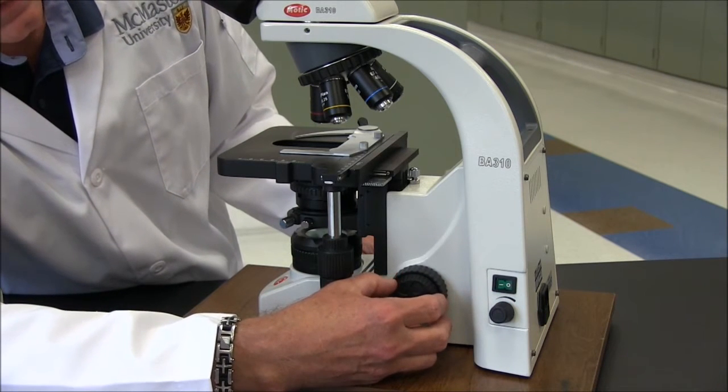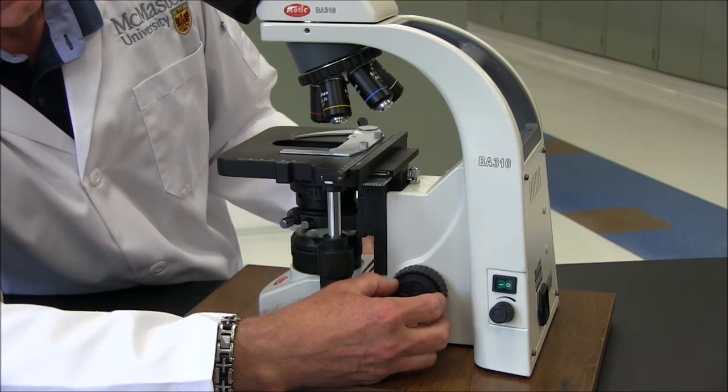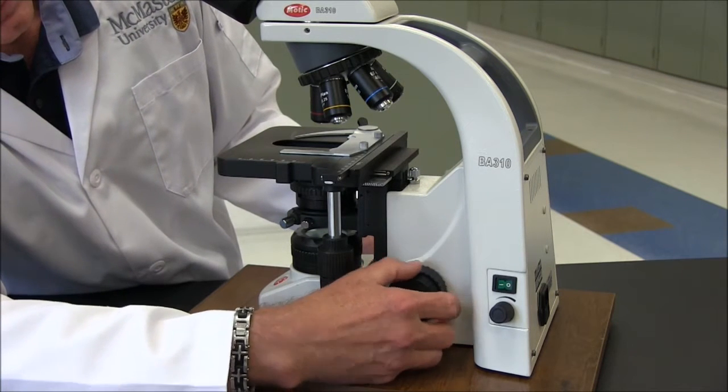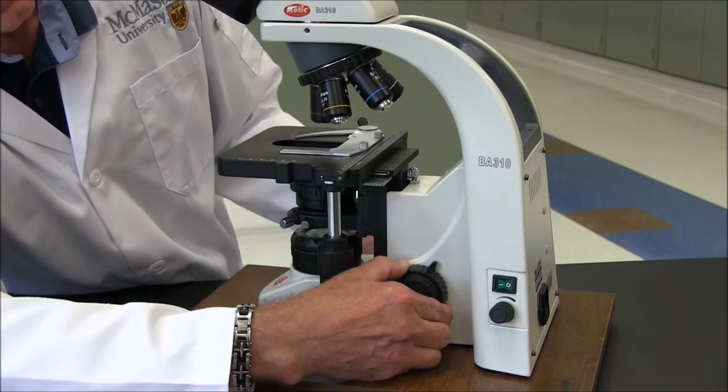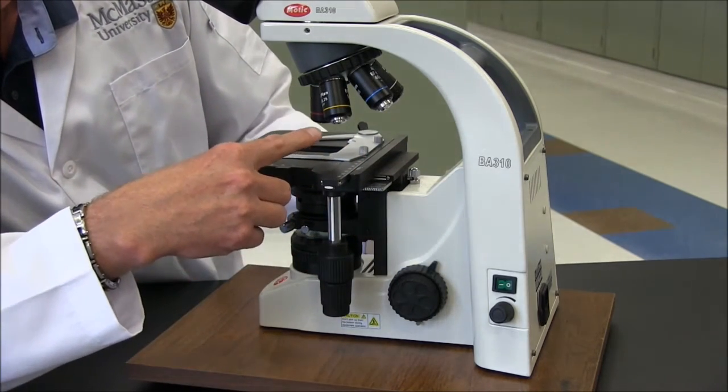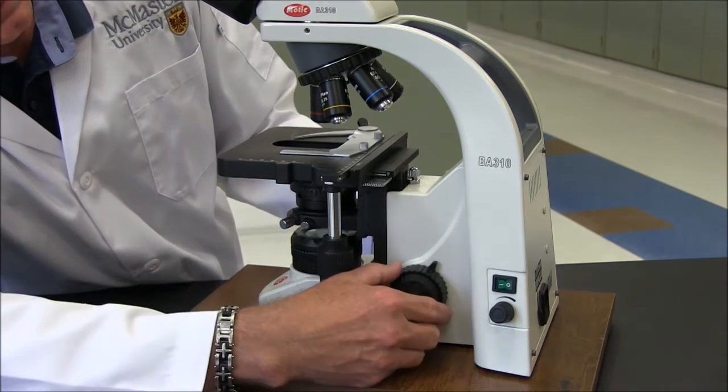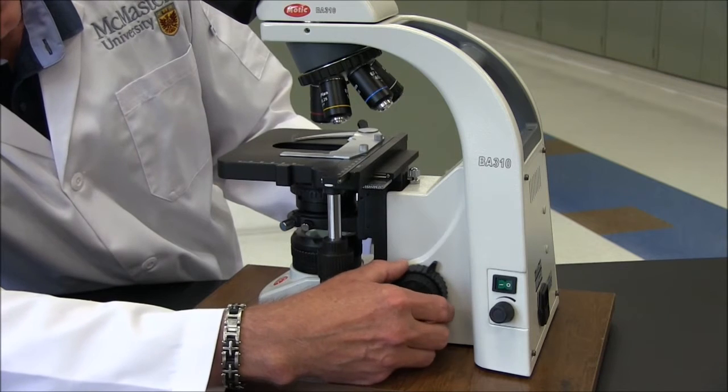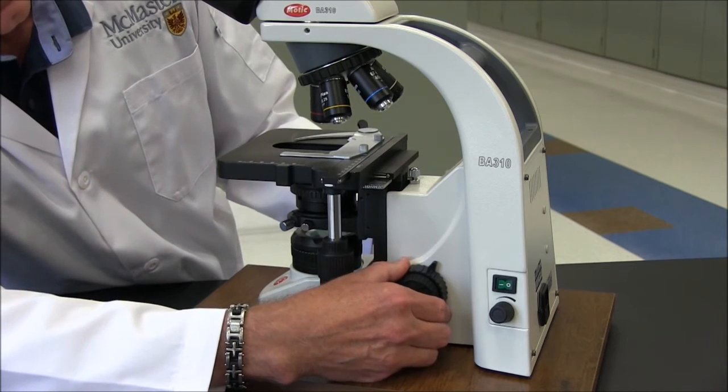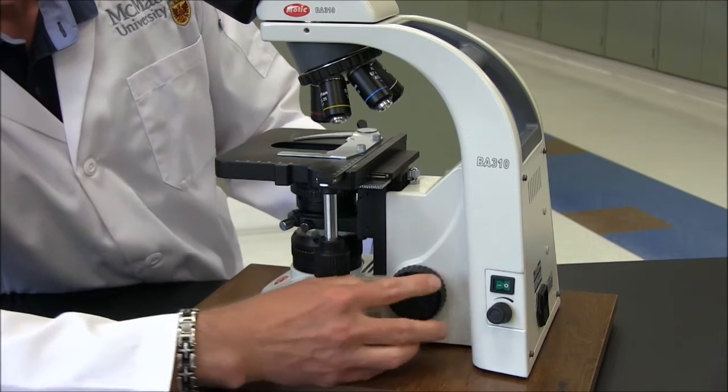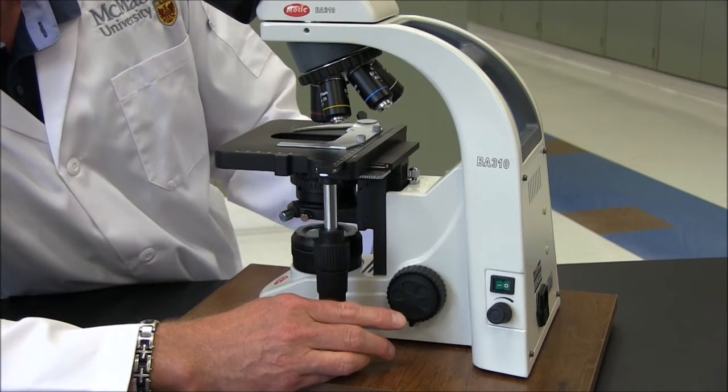The other buttons on this side are the fine focus knob, which is also on the left side, and the upper limit stopper, which when it's in the locked position, limits how high this stage will go up towards the objectives. Normally you don't need this, but if you sit down at the microscope and you realize it's not working properly, check to see that this isn't locked. If it is, just release it. You should be able to move it freely up and down.